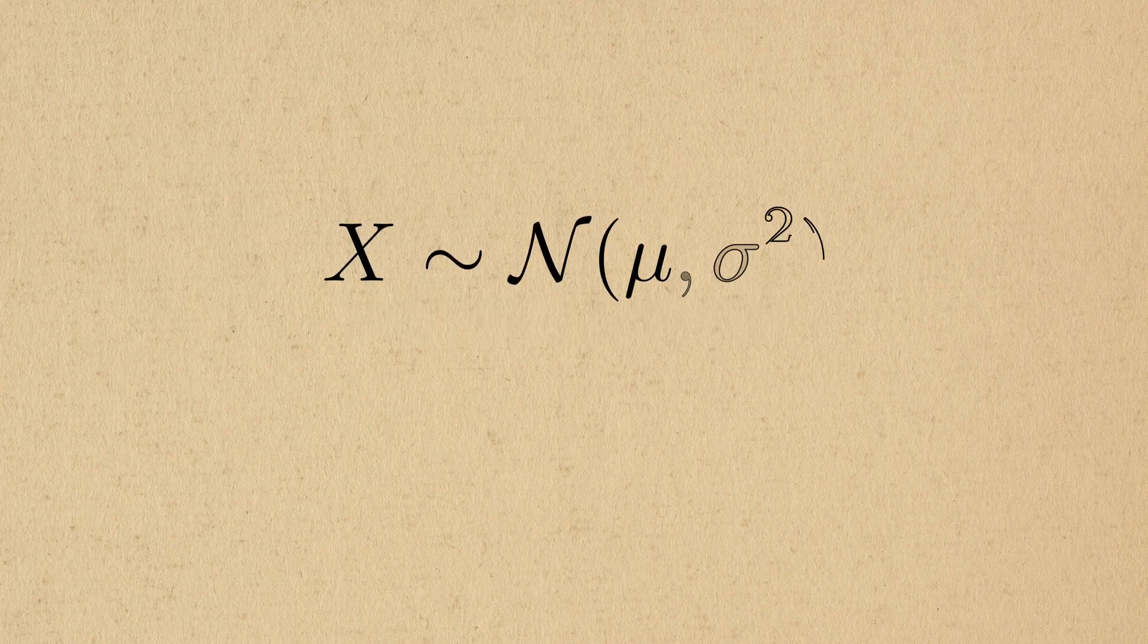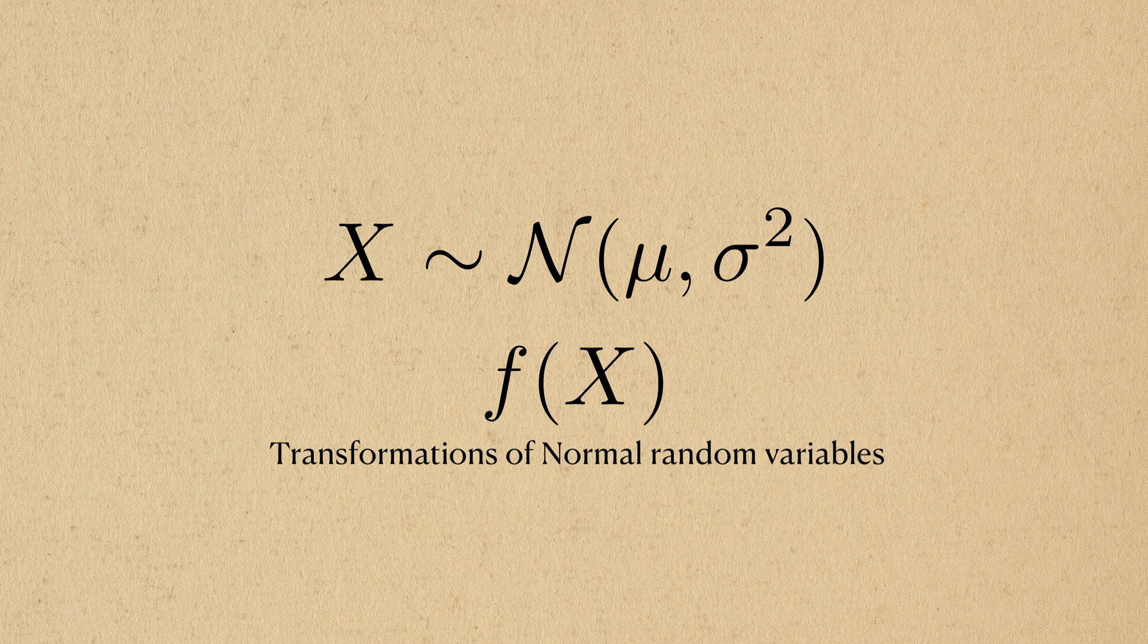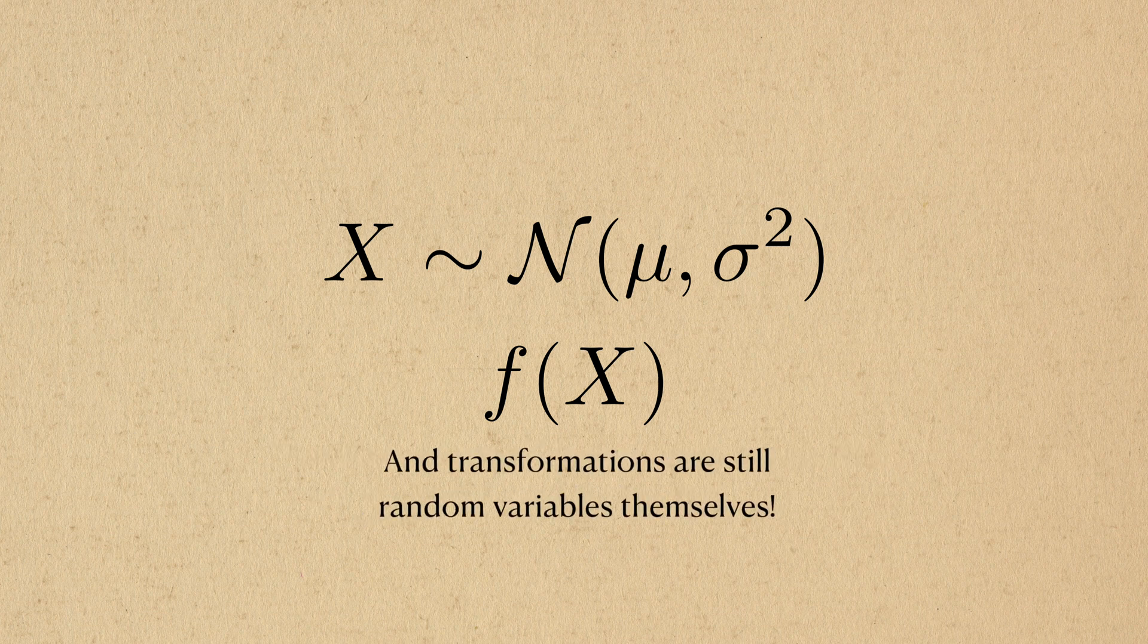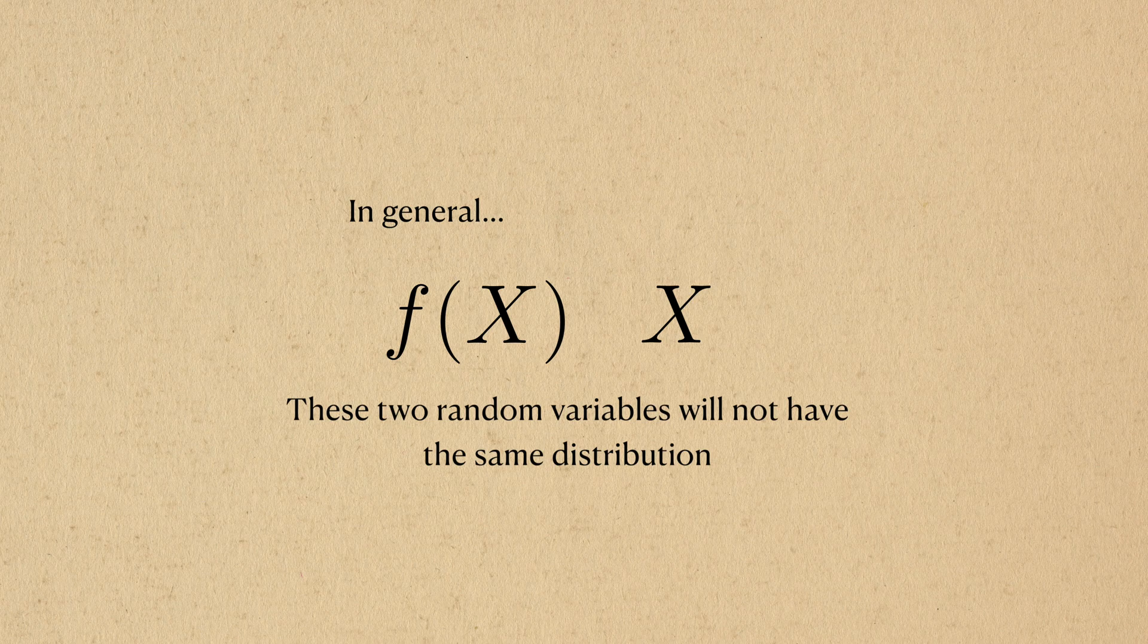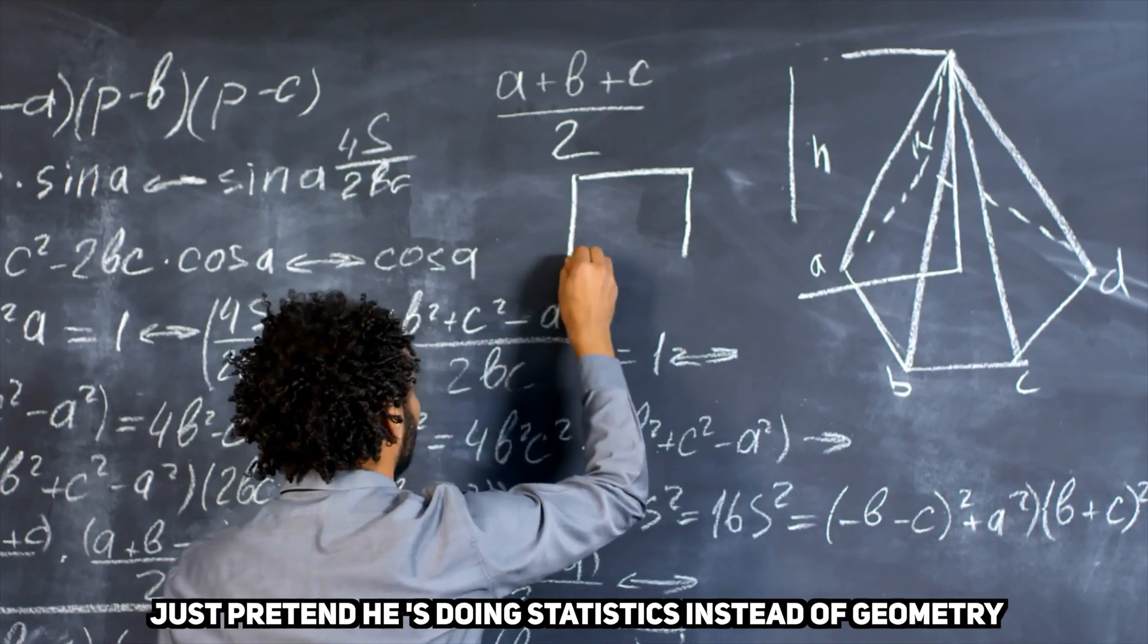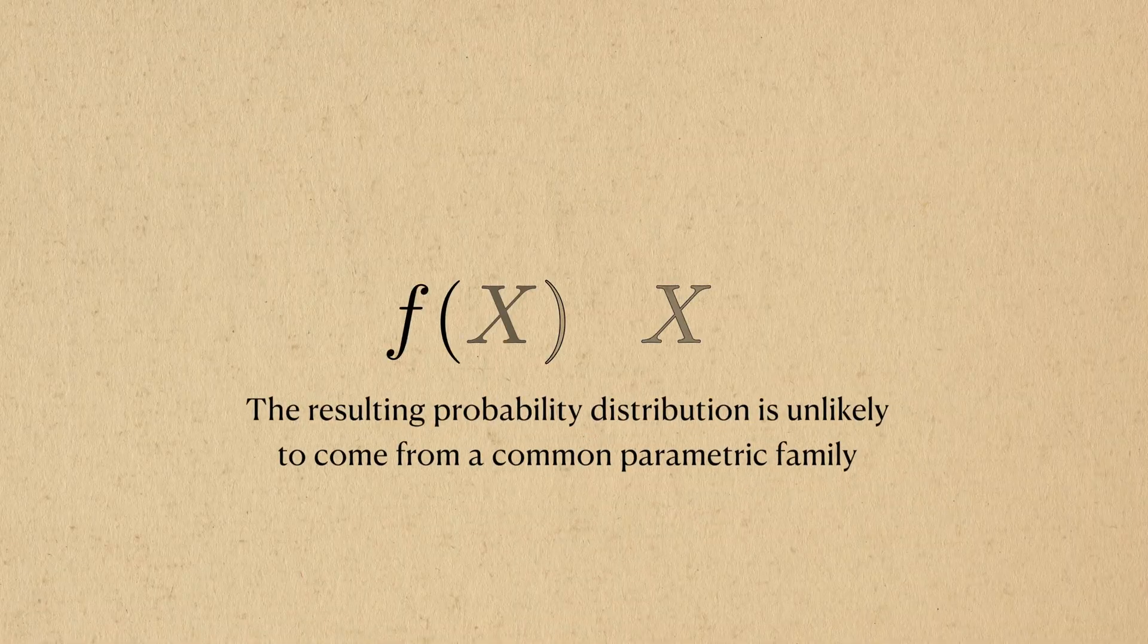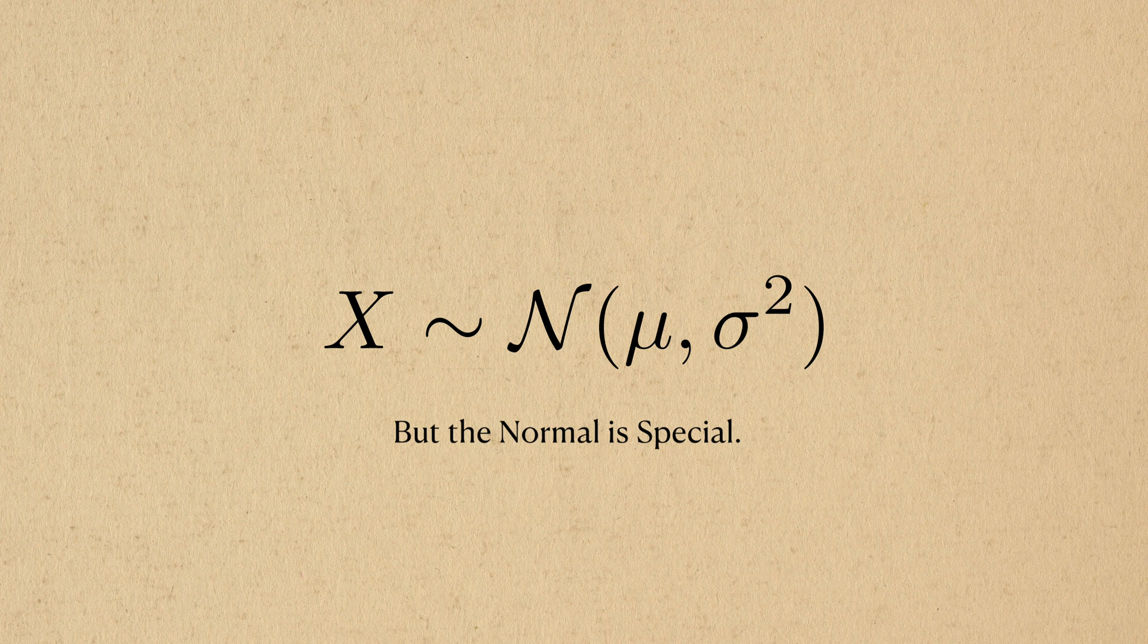Let's get started. Many of the special properties of the normal distribution have to do with transformations of normals. A transformation is nothing more than a function, and a transformation of a random variable is still a random variable. In general, the transformation will not be the same type of random variable as the original input. We might be able to figure out its probability distribution using math, but it's unlikely that it'll come from one of the common distributions. But the normal distribution is different.